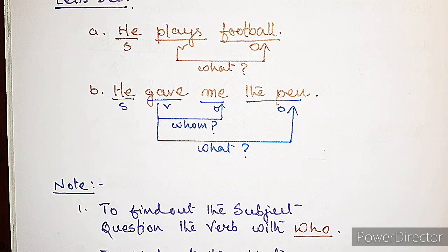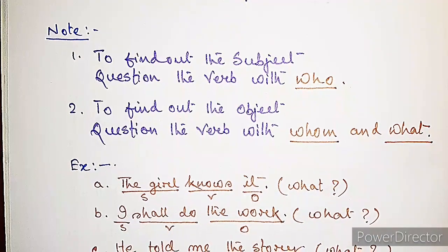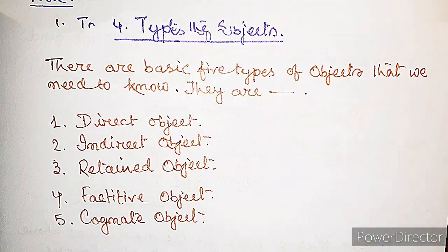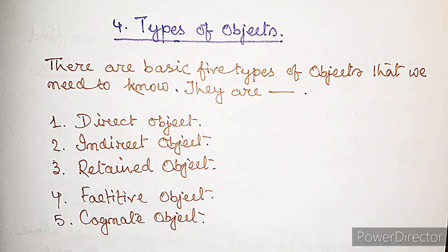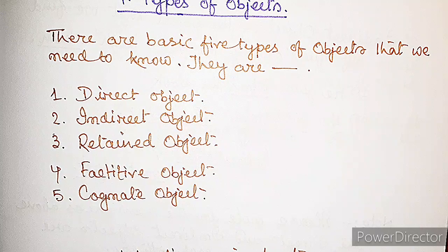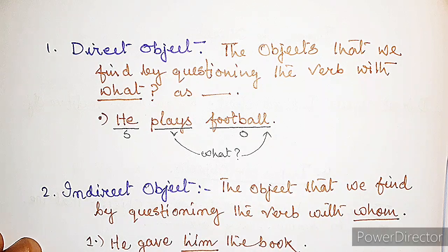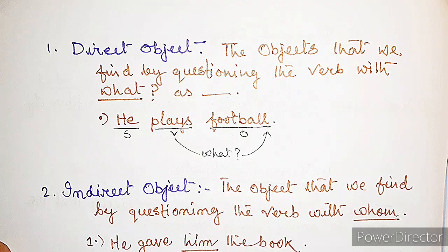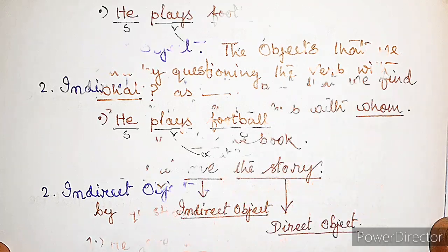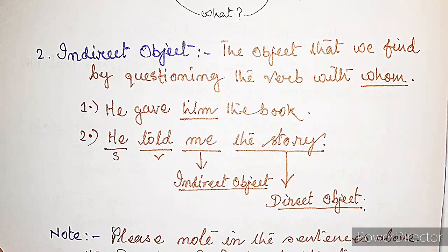There is another object — questioning with 'whom' gives 'me', so this verb has two objects. To find the subject, question the verb with 'who'; to find the object, question the verb with 'whom' and 'what.' There are five basic types of objects: direct objects, indirect objects, retained objects, factitive objects, and cognate objects. The direct object is found by questioning the verb with 'what' — for example, in 'He plays football', 'football' is the direct object.